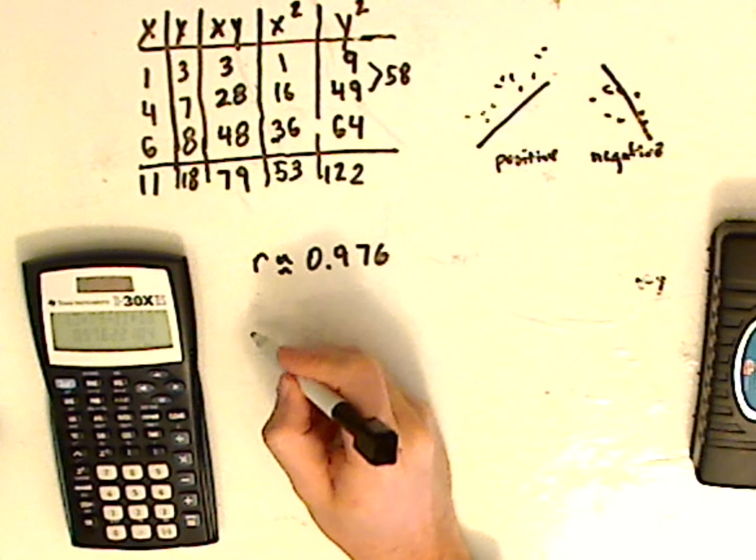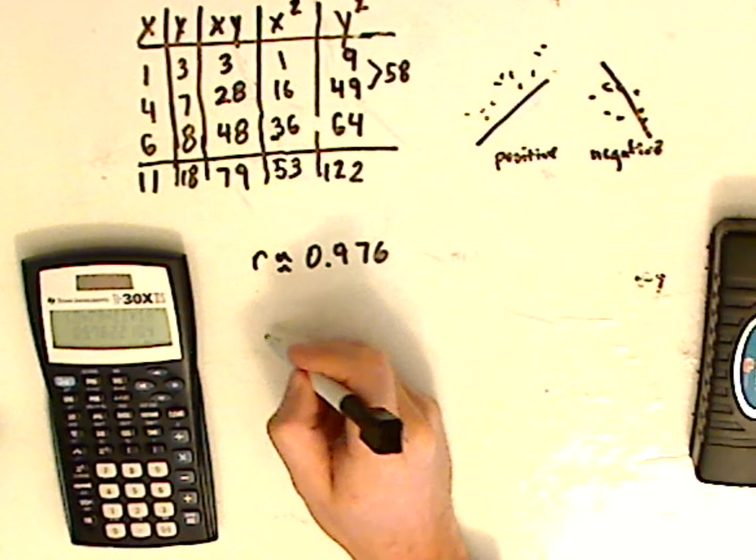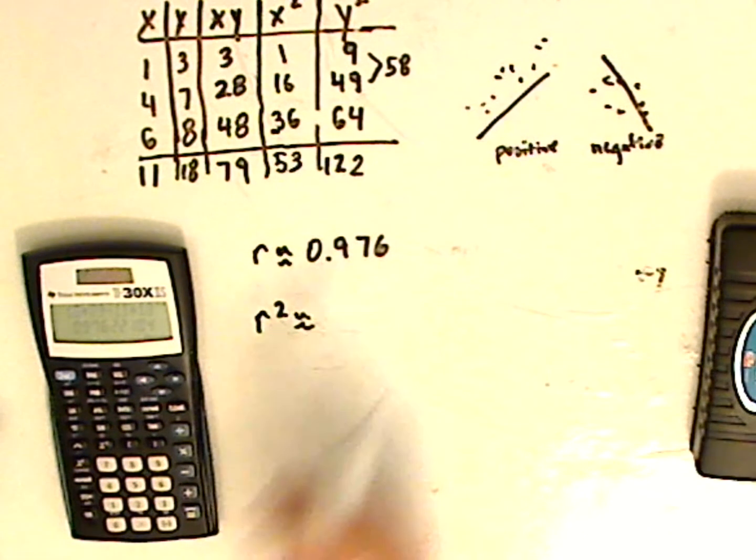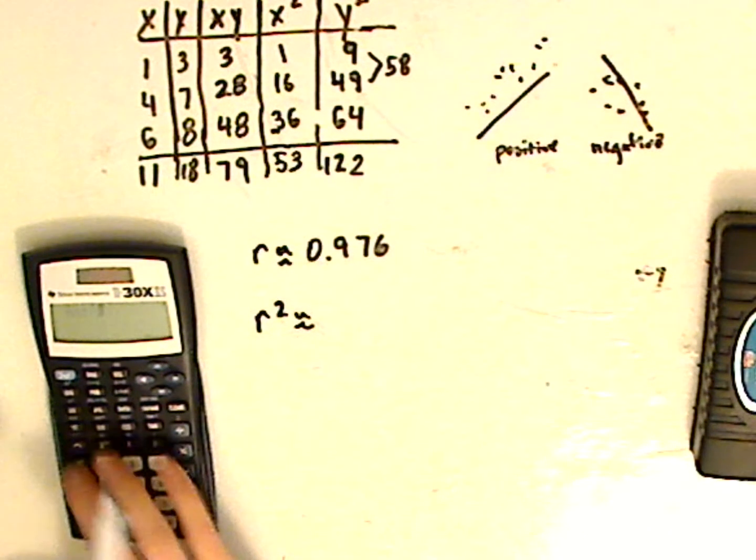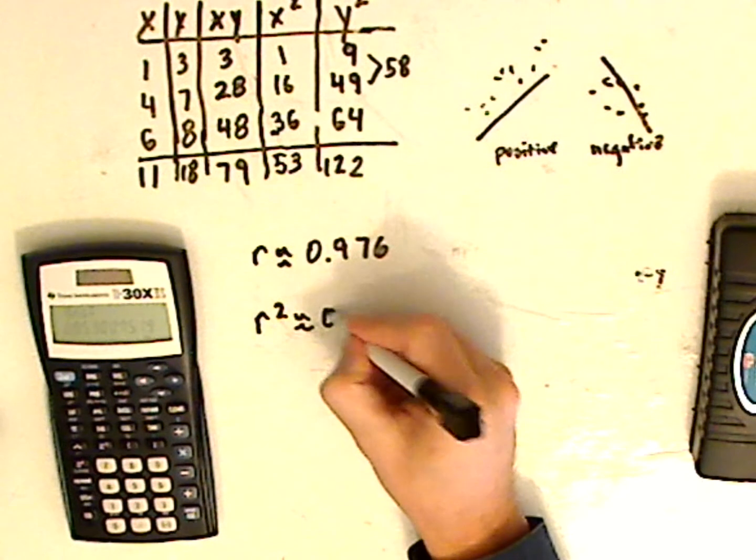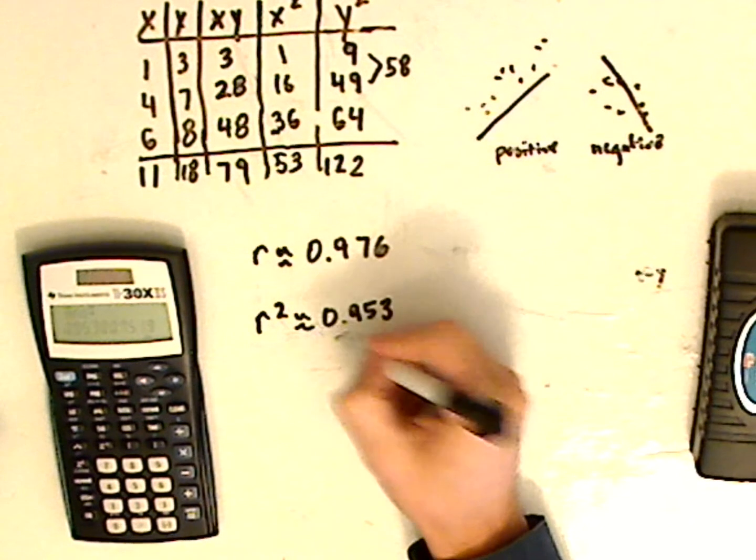Now, to find the coefficient of determination, all you have to do is square it. So you take that, square it, and it's approximately 0.953.